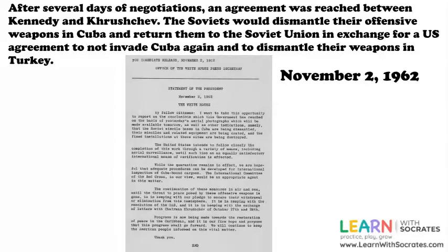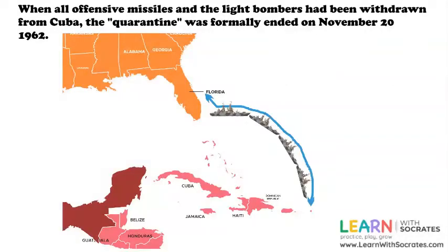When all offensive missiles and the light bombers had been withdrawn from Cuba, the quarantine was formally ended on November 20th, 1962.